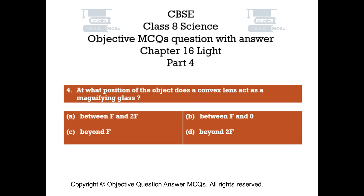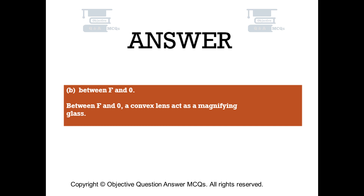Question number 4. At what position of the object does a convex lens act as a magnifying glass? Option A between F and 2F. Option B between F and 0. Option C beyond F. Option D beyond 2F. The right answer is option B: between F and 0. When placed between F and 0, a convex lens acts as a magnifying glass.